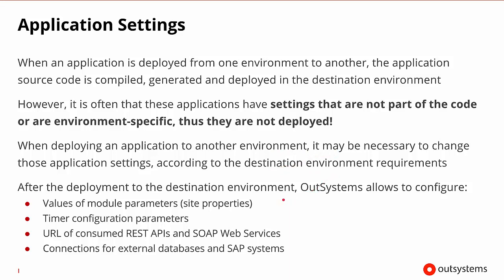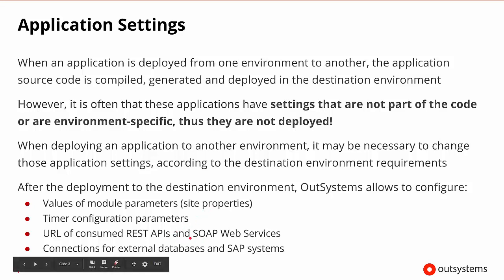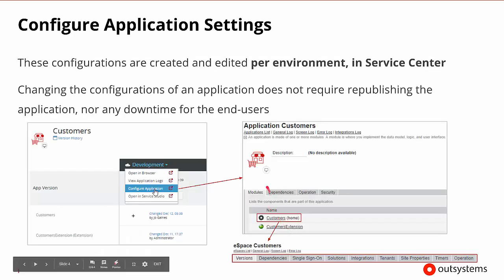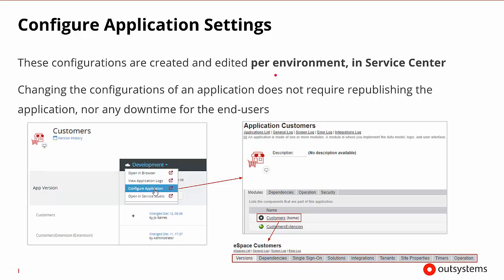After deployment to a new environment, OutSystems allows us to configure the values of module parameters, and those are called site properties. We can tweak the timer configuration parameters. We can change the URL of consumed REST or SOAP web services and connections to different external databases and SAP systems. These configurations can be created and edited per environment, and we would get to those inside of Service Center. Changing the configuration of an application doesn't need any type of republishing, nor does it imply any downtime to the end users.